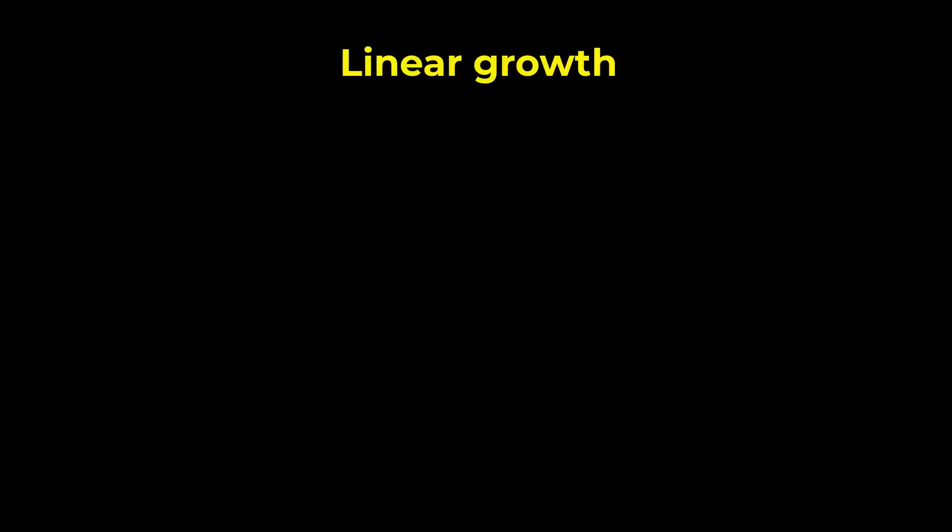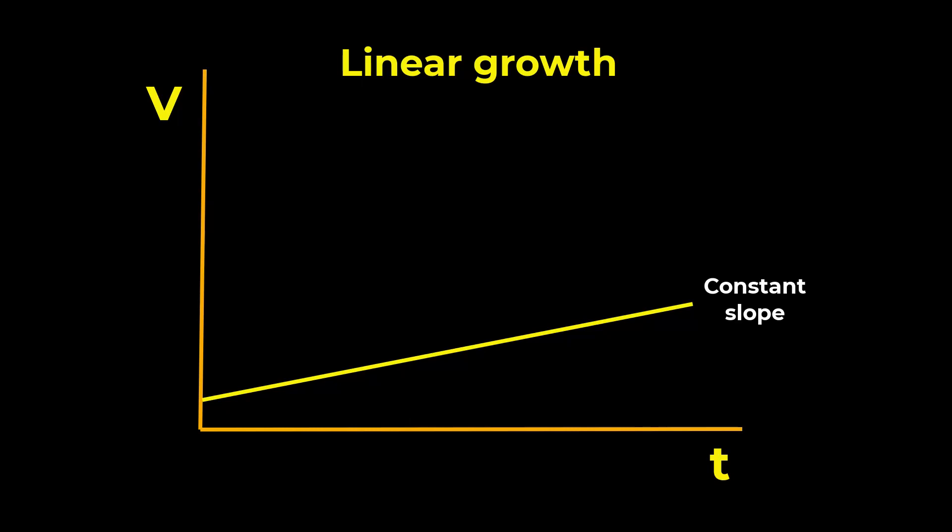Firstly, we have linear growth. As the label suggests, a graph of investment value on the vertical axis against time on the horizontal is a straight line. The slope of the line is constant. This means that it doesn't matter where you are on the timeline. The money growth in each period is exactly the same.